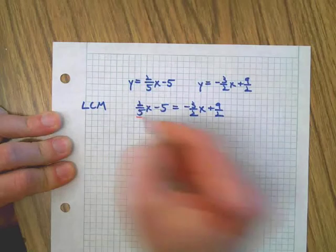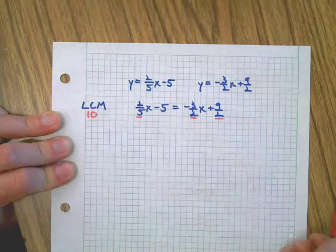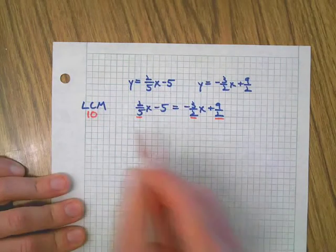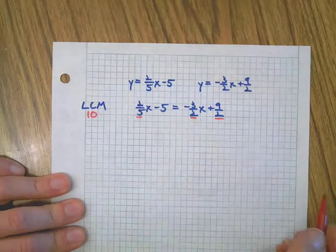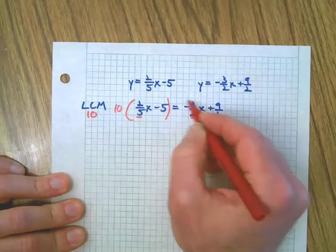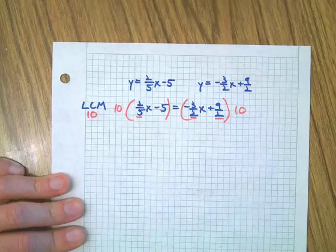Then we want to find the lowest common multiple. We've got these denominators, 5s and 2s. Hopefully that makes you think of a 10. Okay, that's the smallest number that we can multiply evenly all of these denominators into.